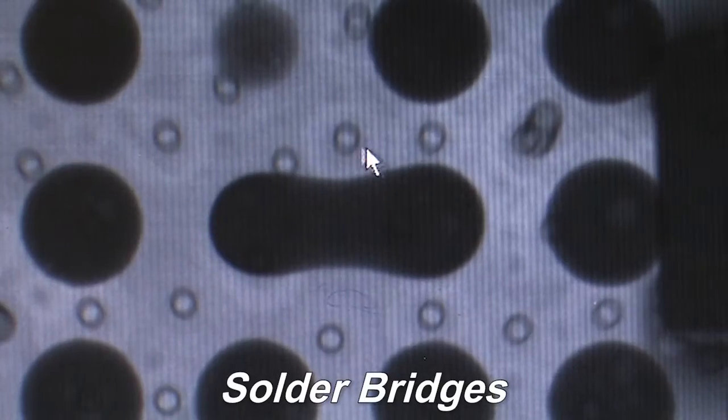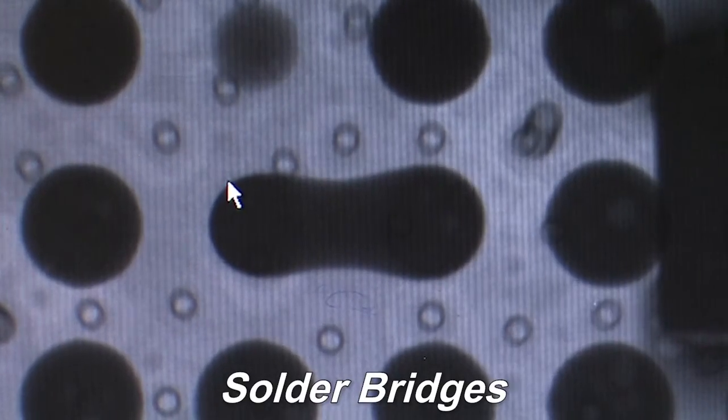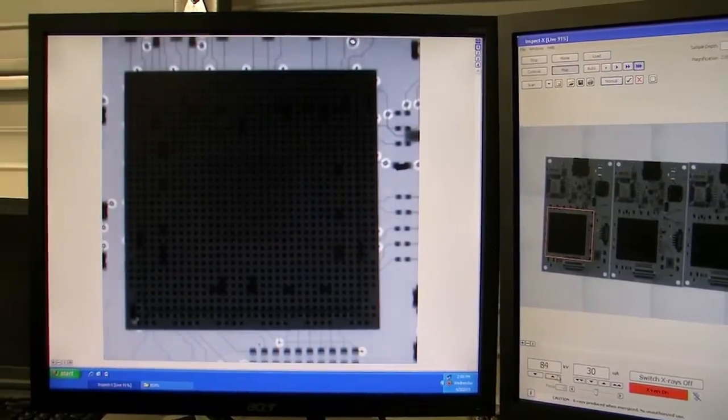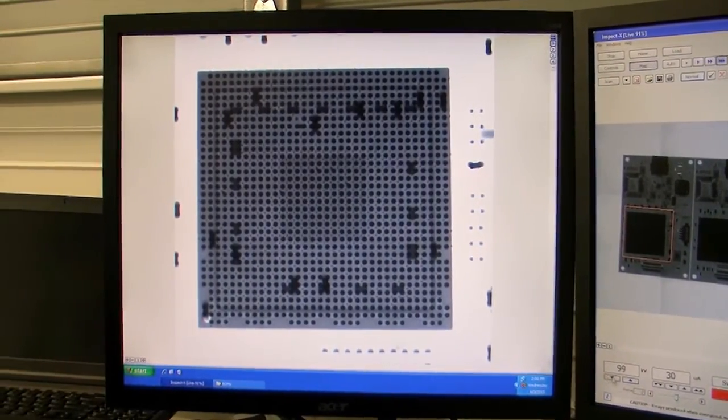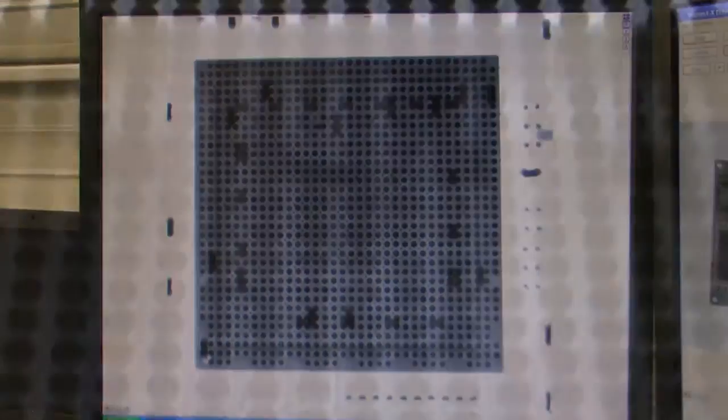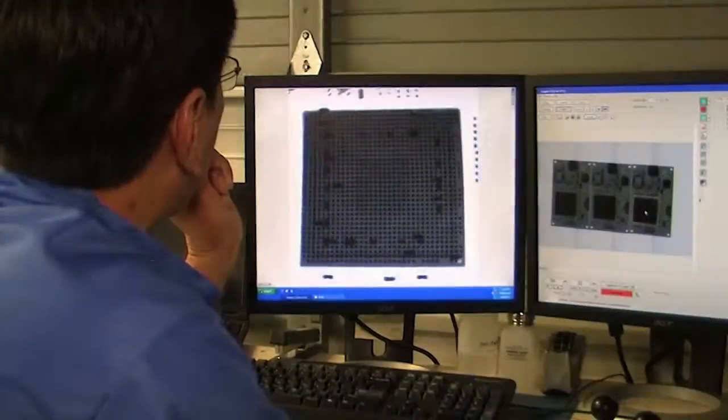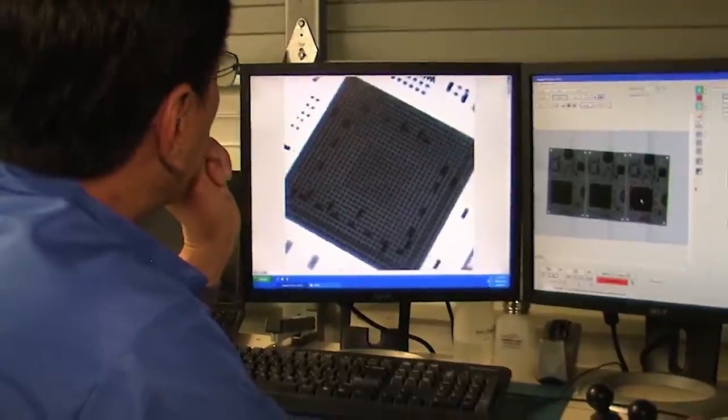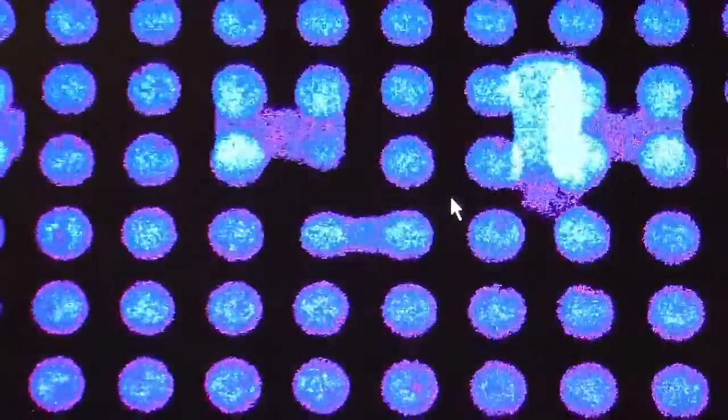Solder bridges occur when solder balls have melted and crossed over to touch another solder ball. Operators examine each BGA to see if the balls have collapsed correctly. This can only be determined by viewing the BGA from an angle. A combination of tilt and rotate is required to give the best unobstructed 3D view of the BGAs.